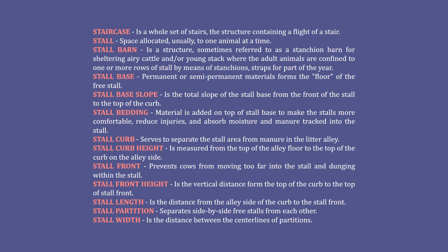Stall base slope: the total slope of the stall base from the front of the stall to the top of the curb. Stall bedding material: material added on top of the stall base to make stalls more comfortable, reduce injuries, and absorb moisture and manure tracked into the stall. Stall curb: serves to separate the stall area from manure in the litter alley. Stall curb height: measured from the top of the alley floor to the top of the curb on the alley side. Stall front: prevents cows from moving too far into the stall and dunging within the stall.